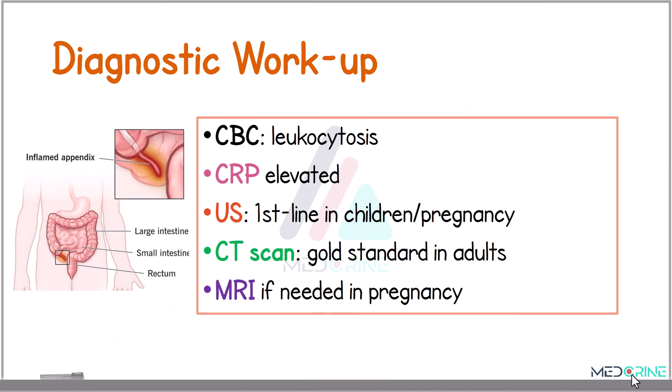The diagnosis of acute appendicitis involves both clinical and radiological assessment. A complete blood count typically shows leukocytosis, and C-reactive protein levels may also be elevated. An ultrasound is usually the first-line imaging modality in children and pregnant patients. For adults, a CT scan remains the gold standard test, with MRI reserved for special situations such as pregnancy.